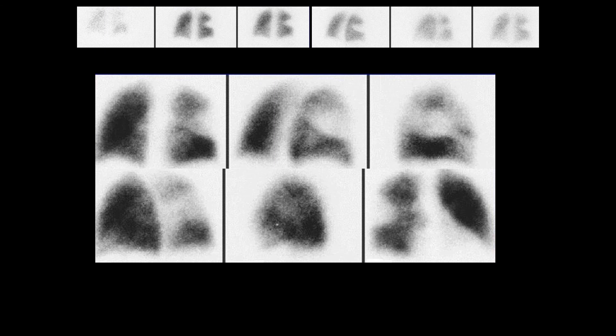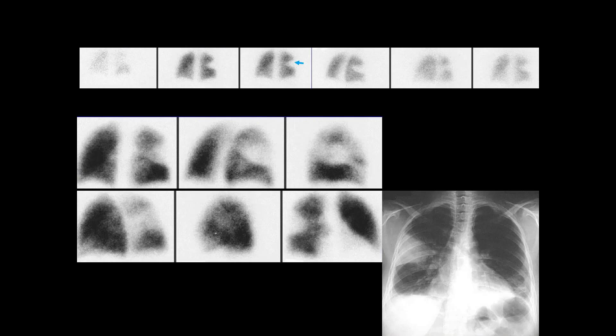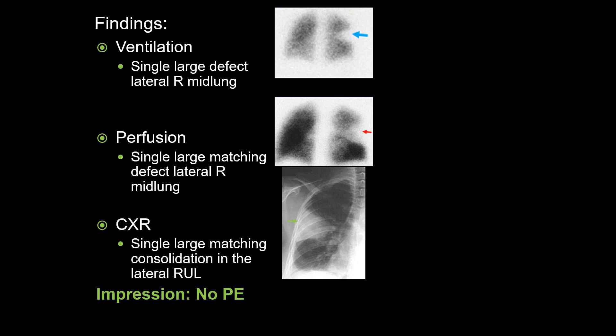In this last case, xenon ventilation images are displayed at the top with perfusion images below, with a comparison chest radiograph on the next slide. Ventilation images demonstrate a large defect involving the lateral mid-right lung. Perfusion images demonstrate a similar large matching defect in the same location. The chest radiograph shows a matching large consolidative opacity in the right upper lobe, likely representing pneumonia. The constellation of findings constitute a triple match in the upper or mid-lung zone and classify the study as no PE.